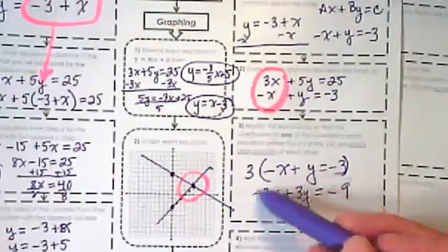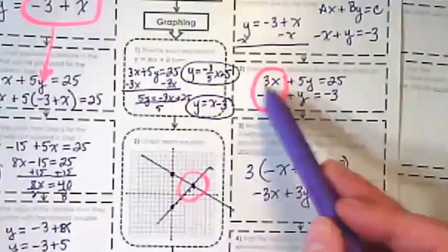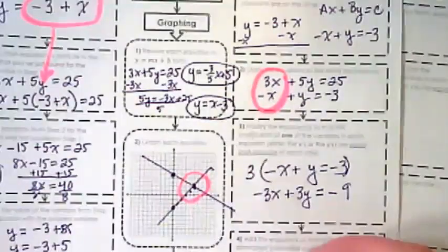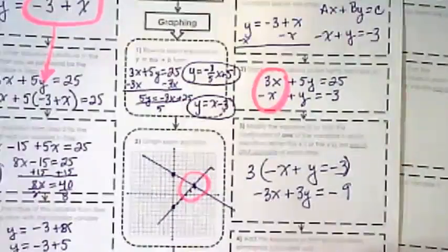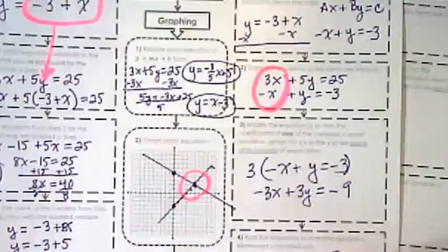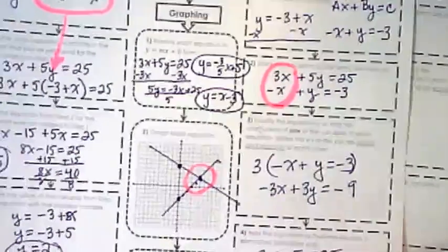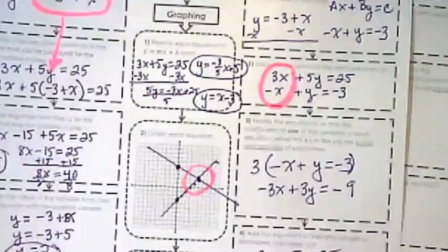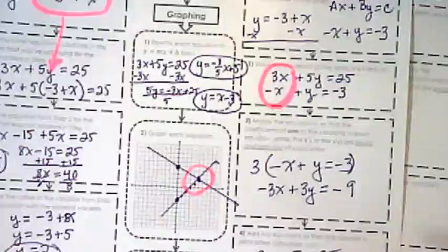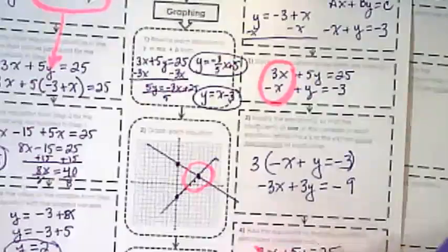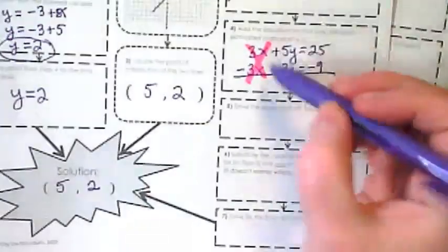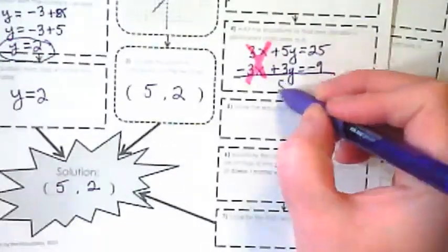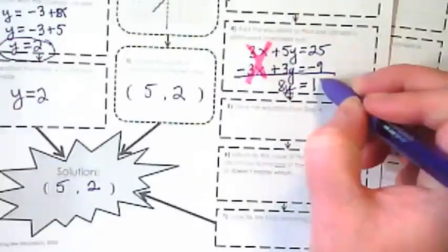Now that I've converted this to be negative 3x, I know it's going to be eliminated when I add it to this other equation. So 3x plus 5y equals 25, and negative 3x plus 3y equals negative 9. This gets eliminated. This gets eliminated. That's going to leave us with 8y is equal to 16.